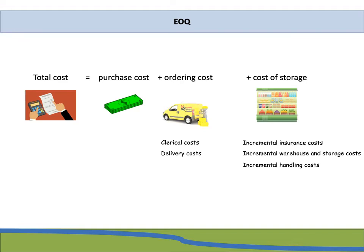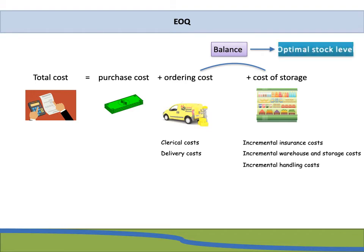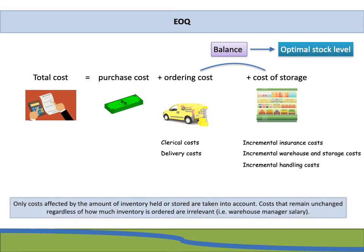There are also incremental handling costs to handle the stock being stored. When it comes to ordering stock or having stock levels, you want to find a balance between the ordering cost and the cost of storage - this balance gives you an optimal storage level. Very importantly, only costs that are affected by the amount of inventory held or ordered are taken into account when determining your economic order quantity. Costs that remain unchanged regardless of how much inventory is ordered are irrelevant - for example, the warehouse manager's salary.